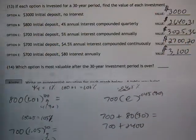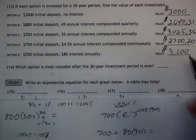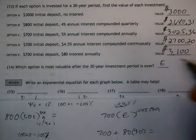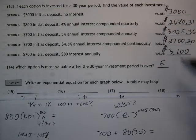So after all that work, which option is the most valuable after the 30-year investment period is over? Option E ends up giving us the most, compared to all the others, $3,100.